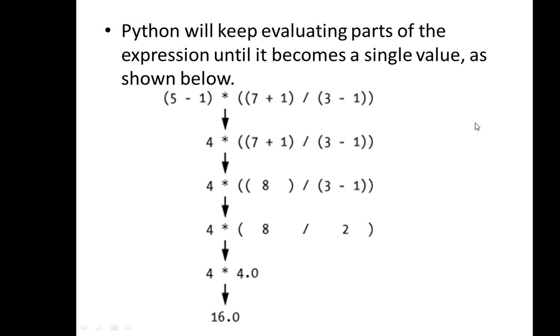For example, this is an expression. Expression consists of values and operators. 5, 1, 7, 1, 3, 1 are all values. And minus, star, division sign, subtraction sign are the operators. Thank you.